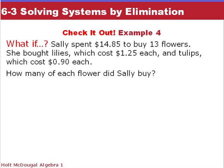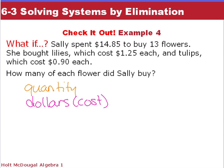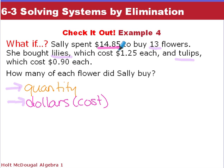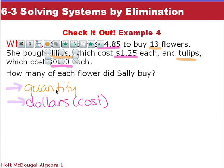Now it's your turn to find the number of flowers. Remember, one equation is dealing with quantity — she's buying 13 flowers total, made up of tulips and lilies. The other equation deals with cost — she's spending $14.85, lilies cost $1.25 each, and tulips cost $0.90 each. Your equations will have different values in each. Quantity is one equation, dollars are another.